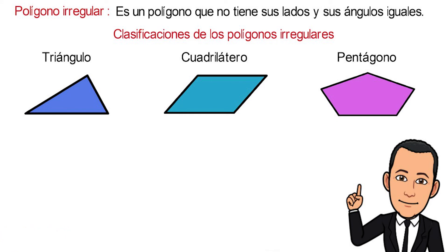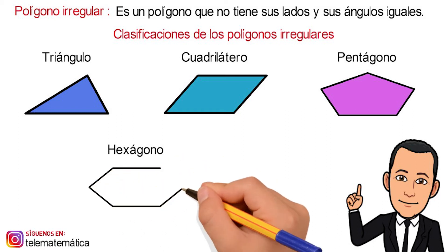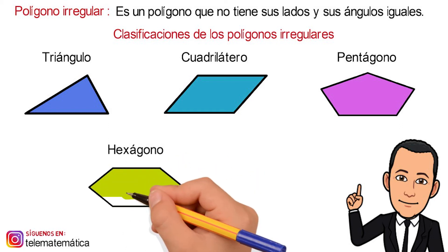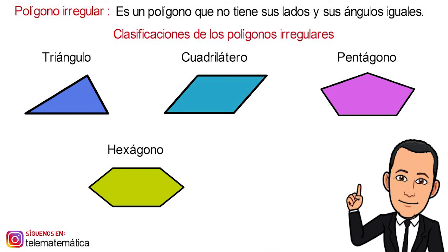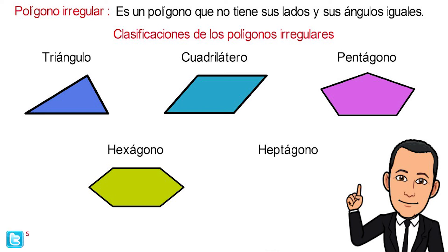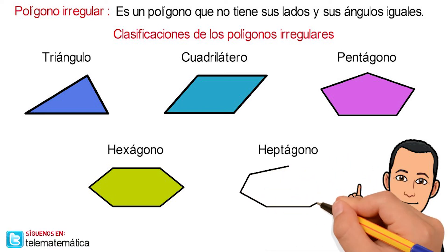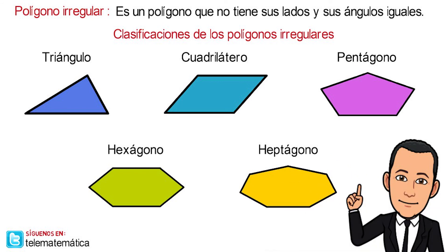In fourth place, the hexagon, that is defined as six sides. And in fifth place, the heptagon, that is defined as seven sides. And these are some of the classifications.